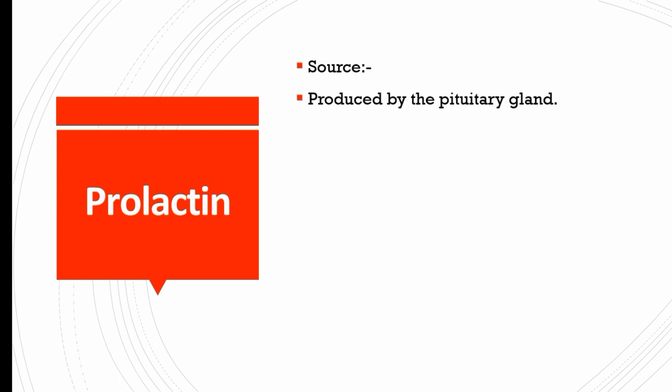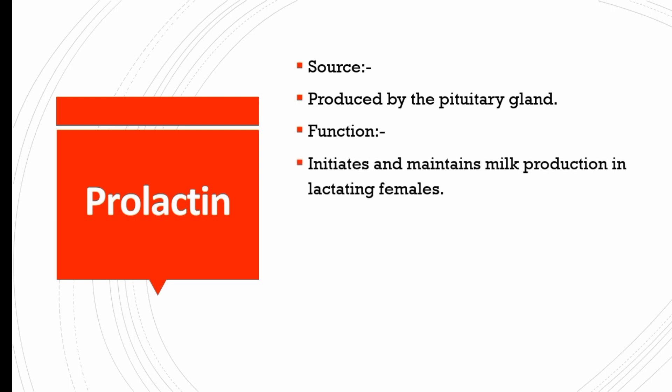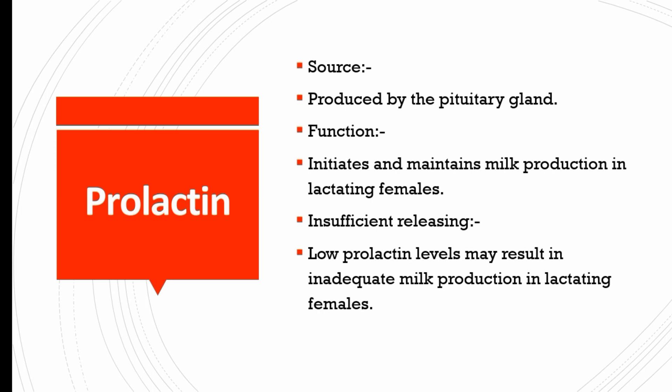Prolactin is produced by the pituitary gland. Its function is to initiate and maintain milk production in lactating females. Low prolactin levels may result in inadequate milk production in lactating females, and it is related to pregnant females.